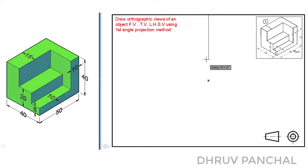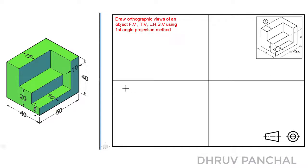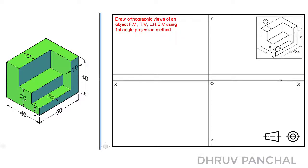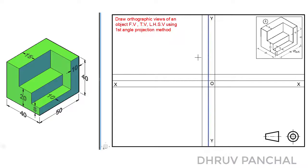Draw a vertical line and horizontal line. Name the horizontal line as XX and the vertical line as YY, and name the intersecting point as O. With the help of a roller scale, draw a line parallel to line XX above and below at a distance of 10 millimeters. Similarly, draw a line parallel to line YY ahead and behind at a distance of 10 millimeters as shown. You can keep any distance as per your requirement.